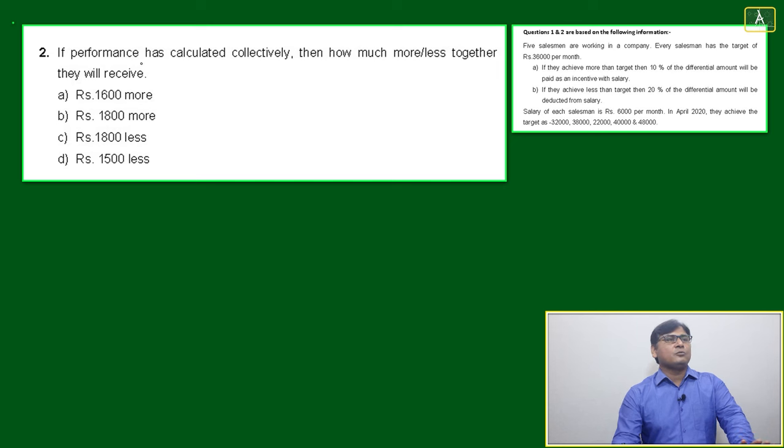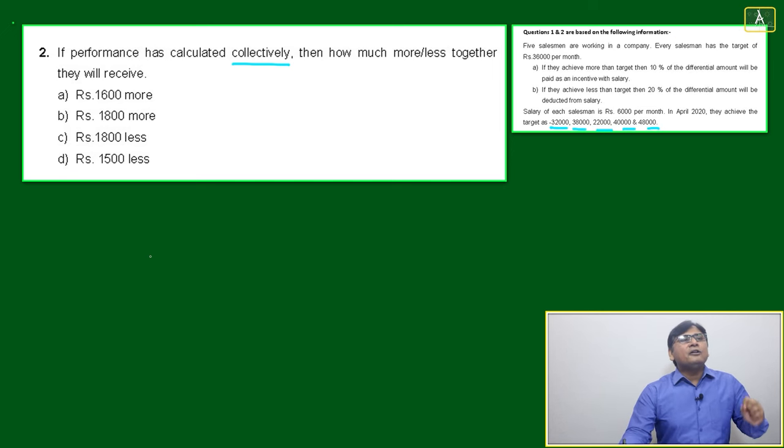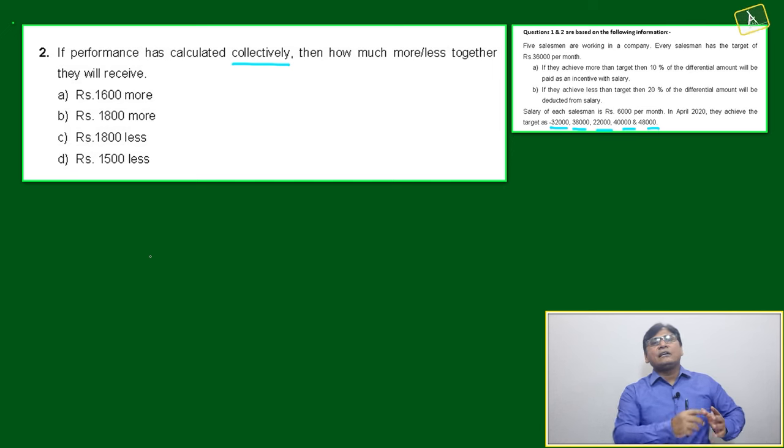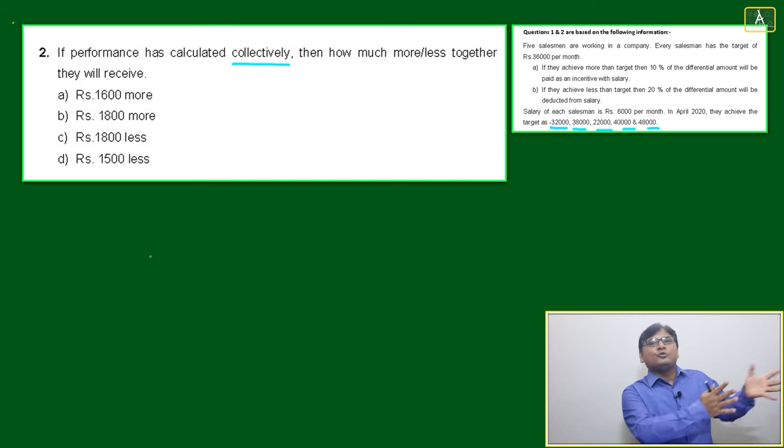That is also based on the same information. If performance is calculated collectively, what is happening individually? We are calculating based on this data: 32, 38, and so on. Now they are telling us, suppose all five salesmen are equivalent to one salesman.